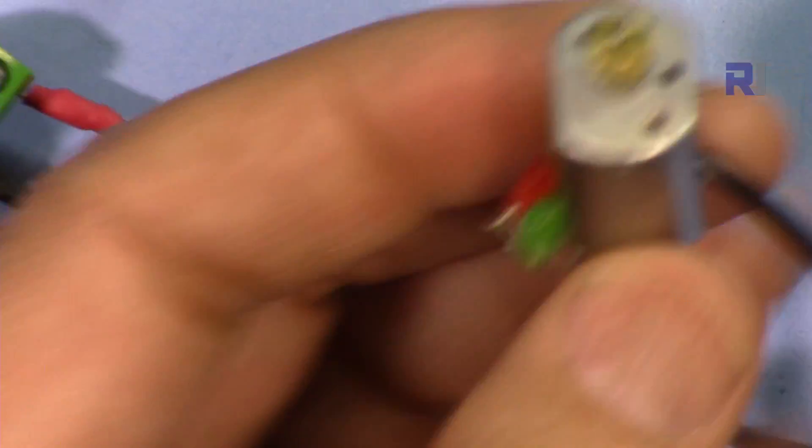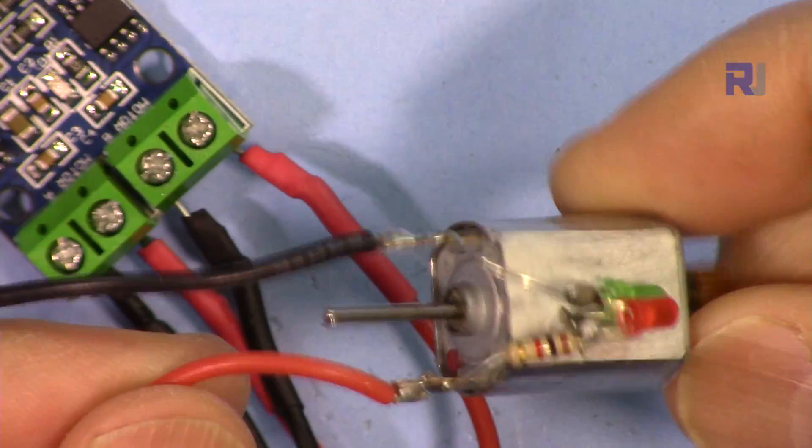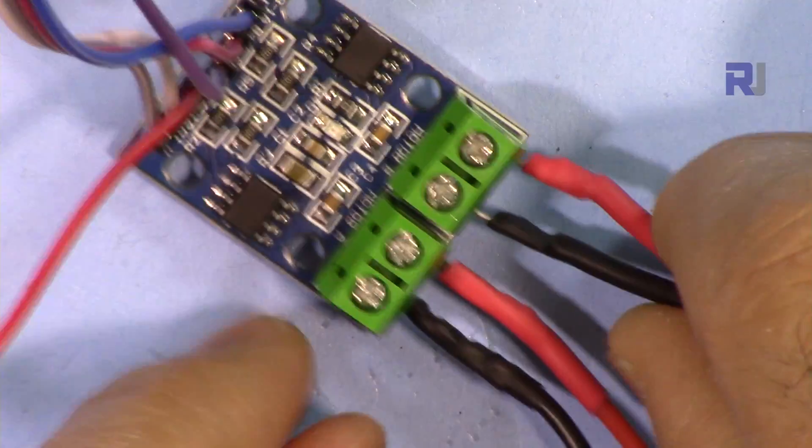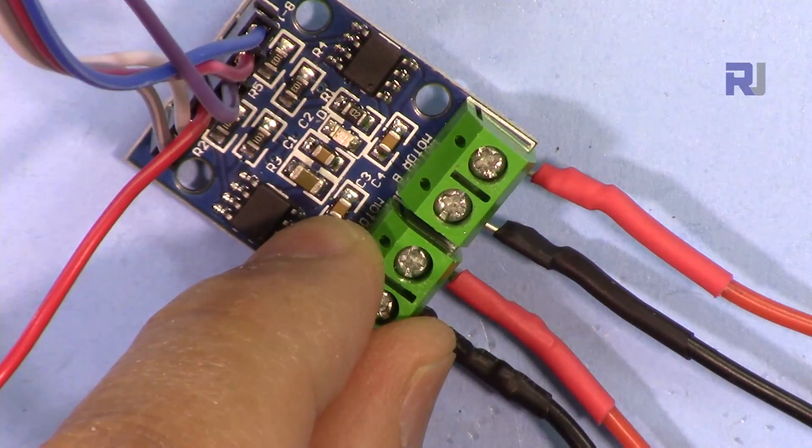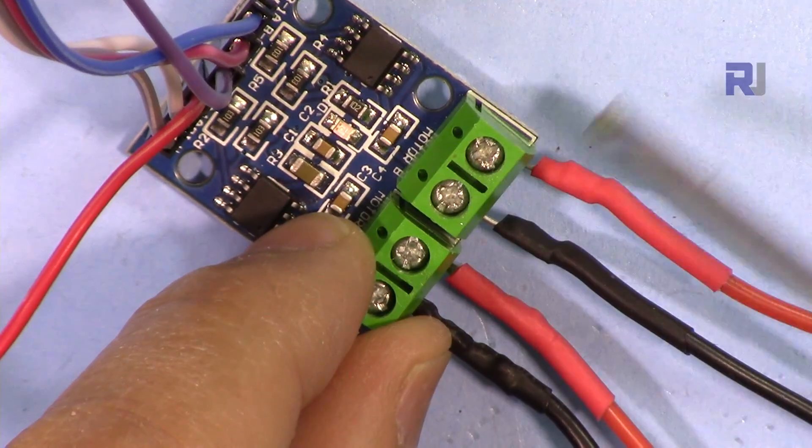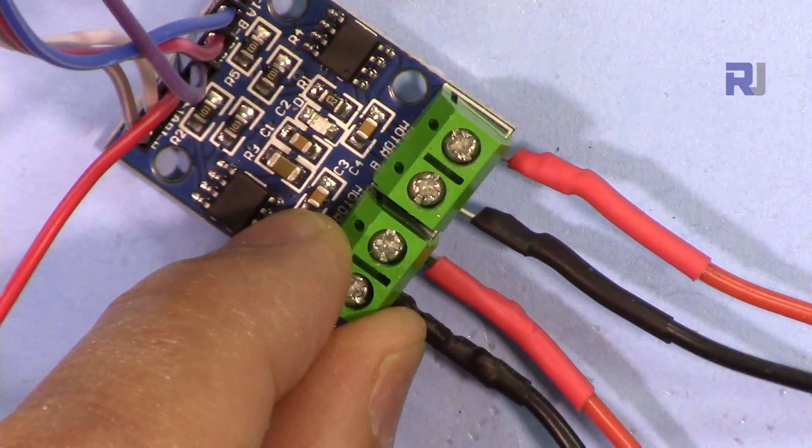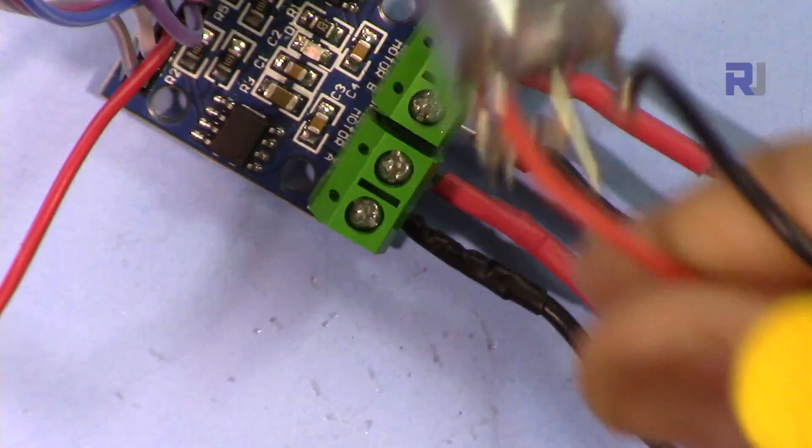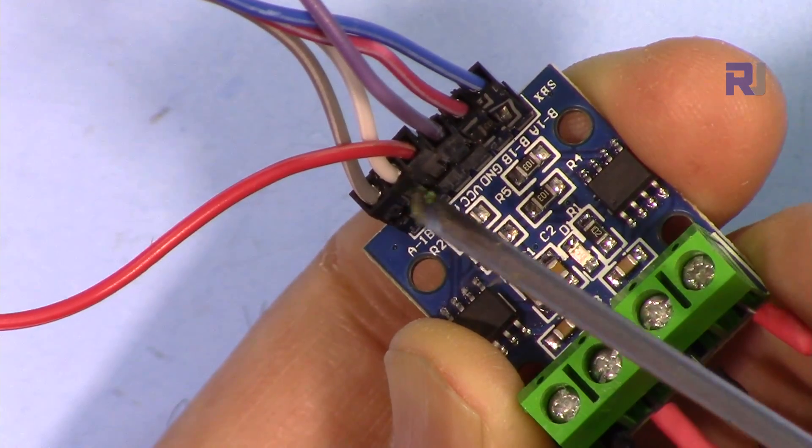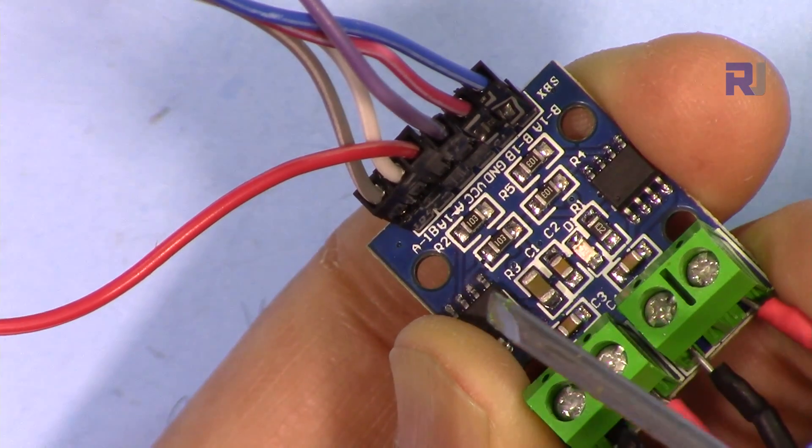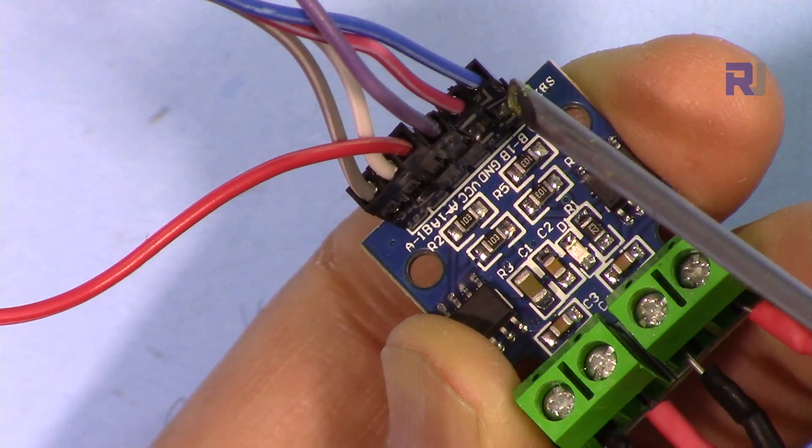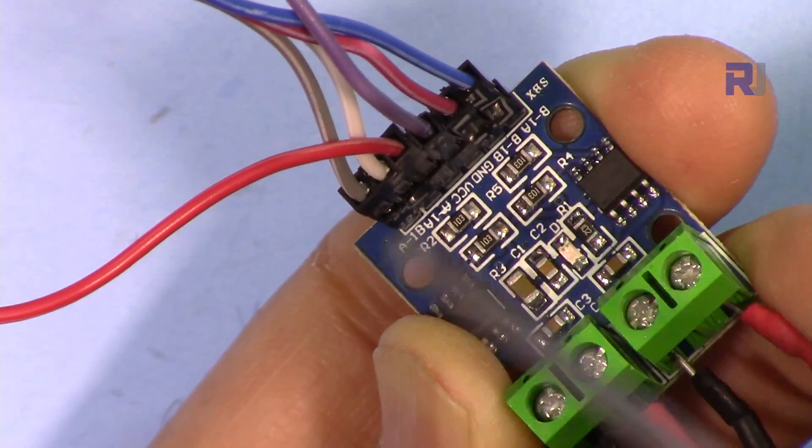Let me explain the wiring. Each motor has two wires. This is a motor connected with two wires. Here we have for motor B, these two are for motor B. The polarity doesn't matter because it can be reversed. This is the other motor that is connected here. This is for motor A. That one is 1A, the other one is 1B, and this is for motor B.